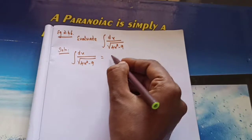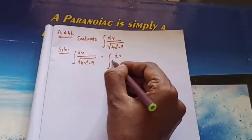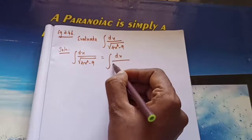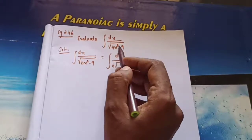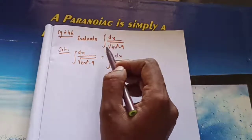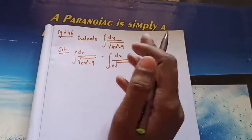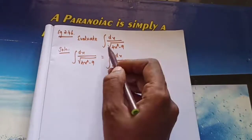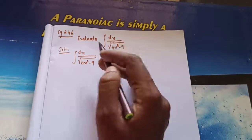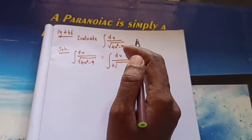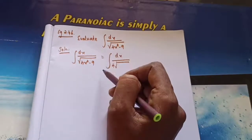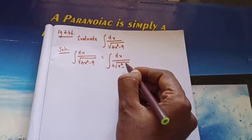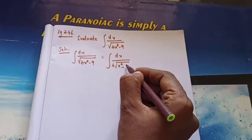We need to change the coefficient of x² to 1. Because of that I took 4 outside. Solution: integral of dx divided by √[4(x² minus 9/4)]. Taking √4 equals 2 outside the square root: (1/2) times integral of dx divided by √(x² minus 9/4).